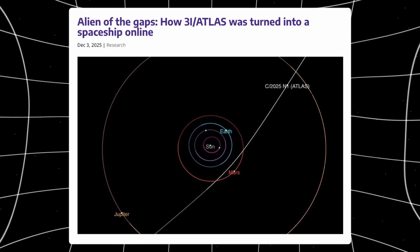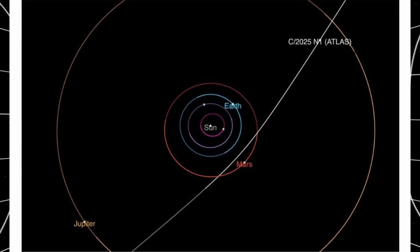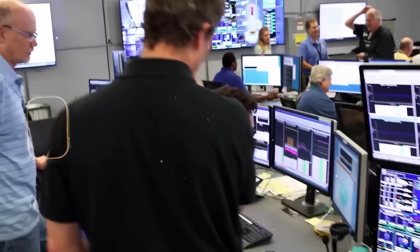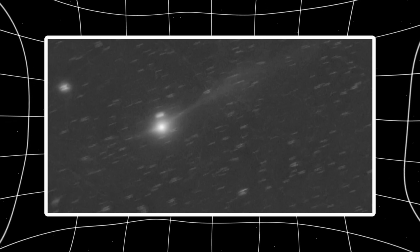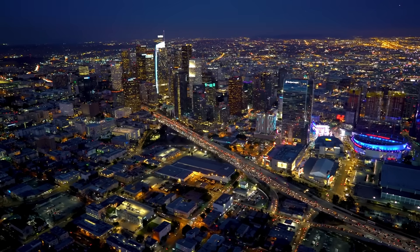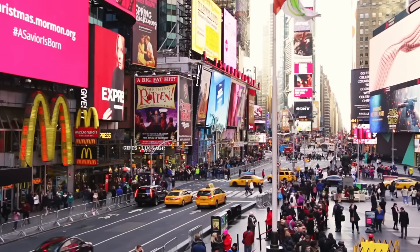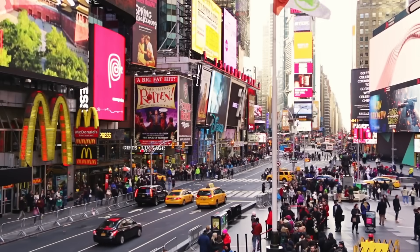3i Atlas reaches Jupiter's hill sphere, the invisible boundary where the planet's gravity balances the sun's pull. And here's what has astronomers frozen. The object is arriving with a precision error of one part in 26,000.